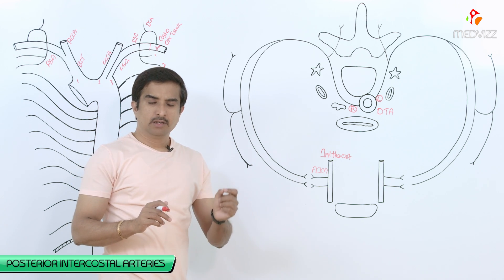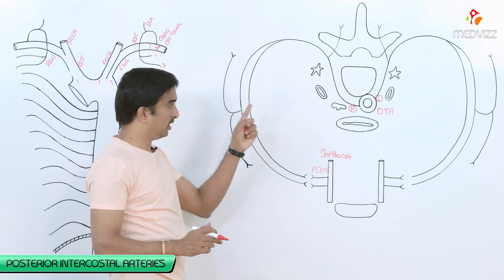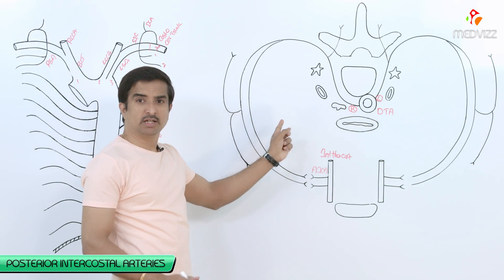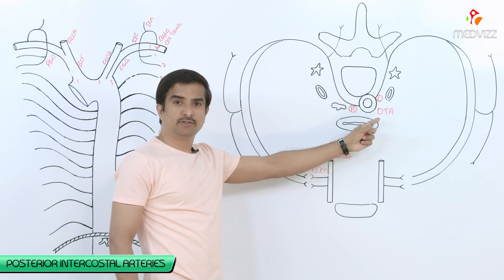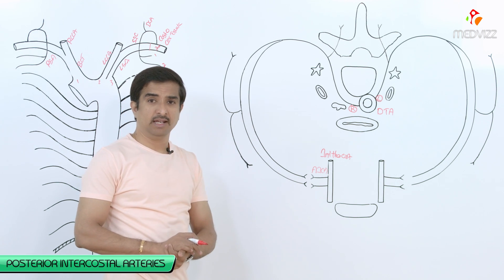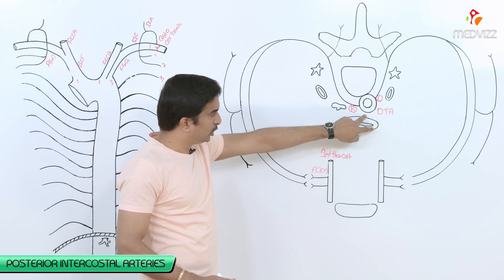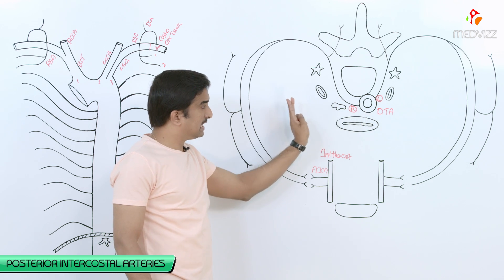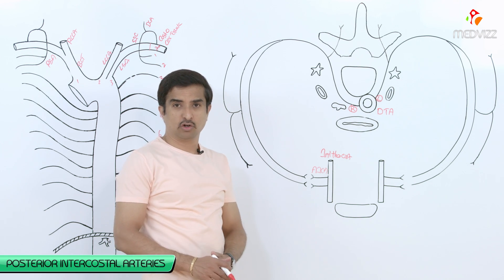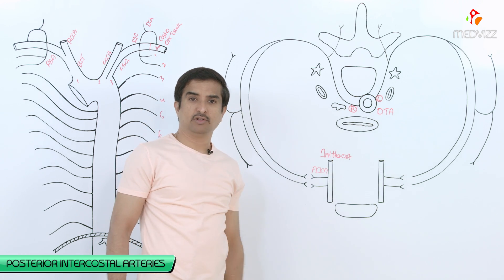The right posterior intercostal arteries arising from the descending thoracic aorta are longer compared to the left posterior intercostal arteries. The main reason is that the descending thoracic aorta lies on the left side and anterior to the vertebral column, which is why the right posterior intercostal arteries are longer than the left.